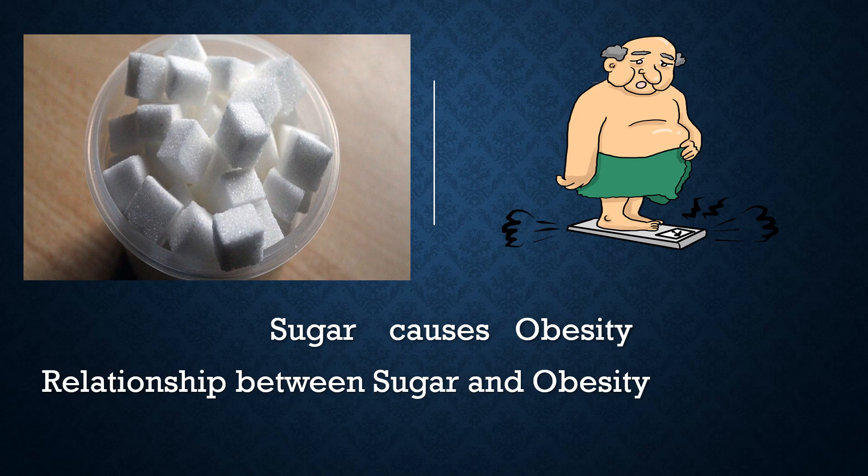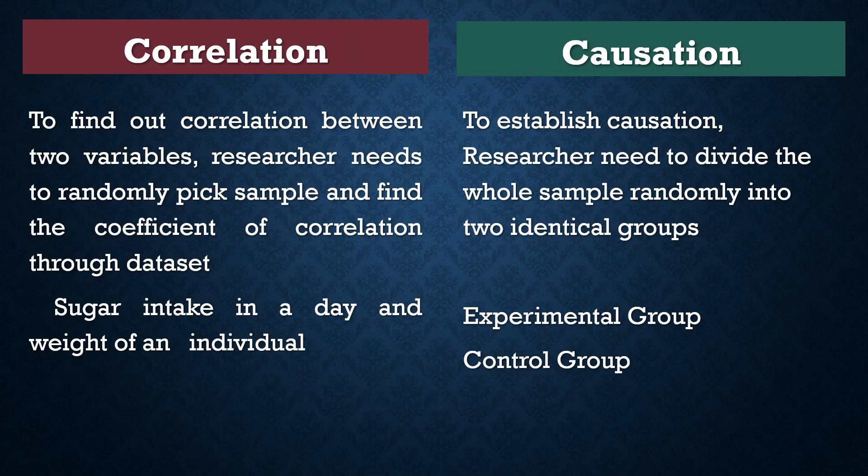There is another example: sugar causes obesity, or the relationship between sugar and obesity. To find the correlation between the two variables, the researcher needs to randomly pick a sample and find the coefficient of correlation through data on sugar intake per day and the weight of an individual.